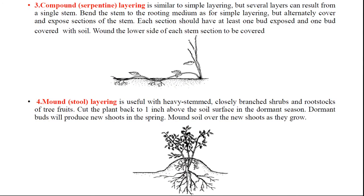Serpentine layering is again like simple layering, but a healthy, long-distance free climber twig of the plant is used, and in a serpentine manner some parts are buried while others remain open, so from a single branch we can develop three to four plantlets. In mound layering, used with heavy-stemmed closely branched shrubs or rootstock, the plant is cut back to one inch above the soil surface in the dormant season, and in the favorable season the cut portions give a number of seedlings with root formations, allowing multiple plants to develop from a single parent.